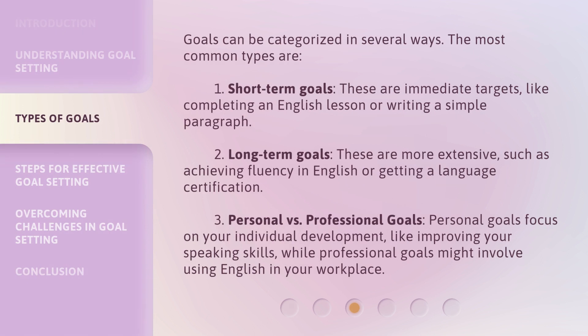Goals can be categorized in several ways. The most common types are: 1. Short-term goals — these are immediate targets, like completing an English lesson or writing a simple paragraph. 2. Long-term goals — these are more extensive, such as achieving fluency in English or getting a language certification.